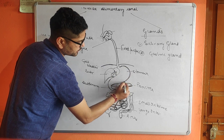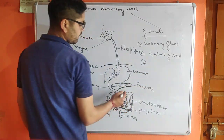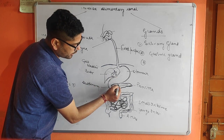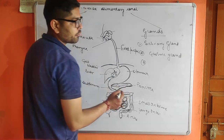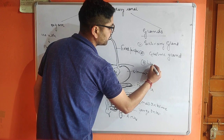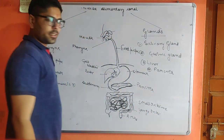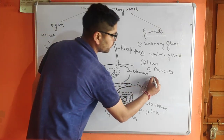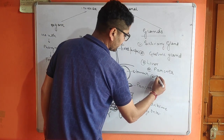The next gland is present in the stomach wall and is called the gastric gland. The food then enters the small intestine at the duodenum. Both the liver and the pancreas also act as glands — what they secrete we will discuss in further detail. Then the food enters the small intestine.